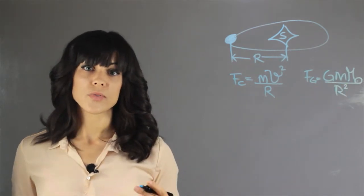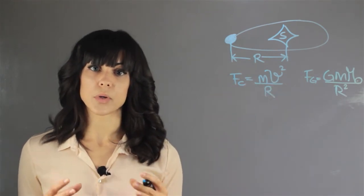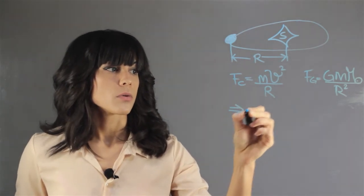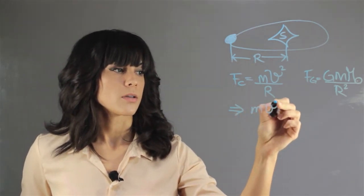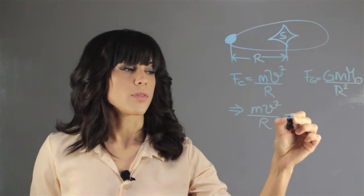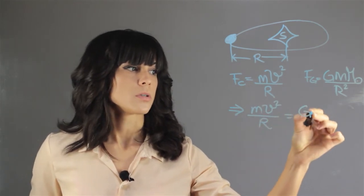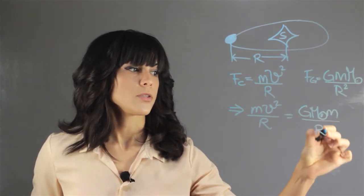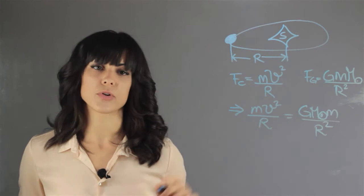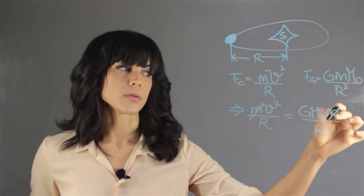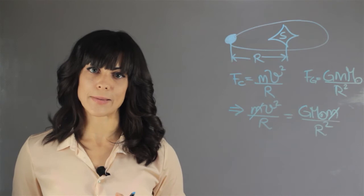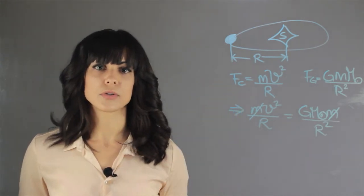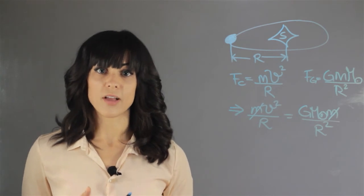In order to figure out what this velocity is, we set these two equations equal to each other. This leads to a very interesting dependence: you have the mass of Mercury on both sides, and it cancels when you divide both sides by the same thing. Therefore, the mass of the planet has nothing to do with the orbital velocity of the planet.